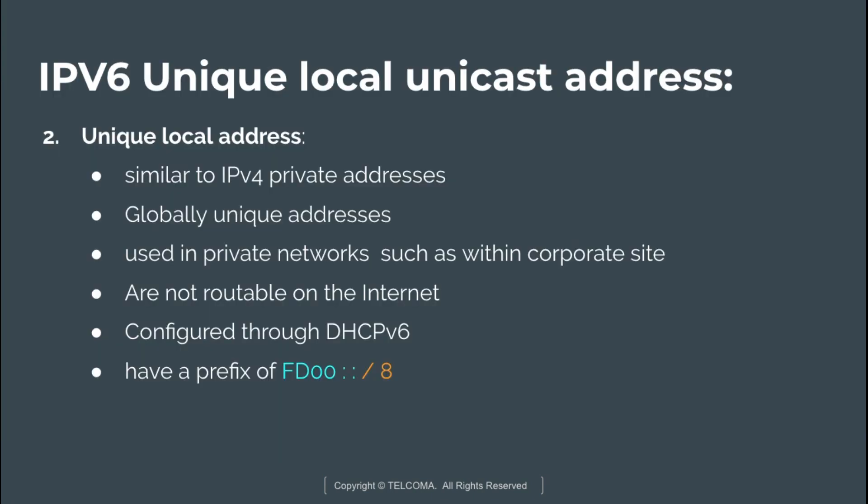The next address is the unique local unicast address. Similar to IPv4 private addresses, unique local addresses provide globally unique addresses — every device in the network has a unique address. They are used on private networks such as within a corporate site. These addresses are not routable on the internet; to access another network or the internet, a public IP address is required.